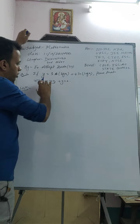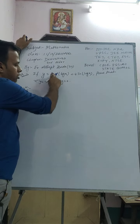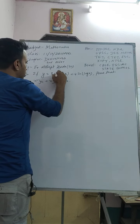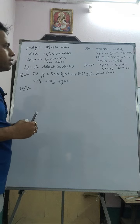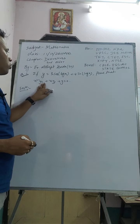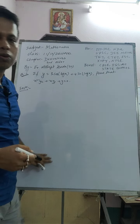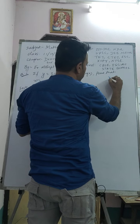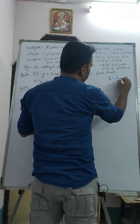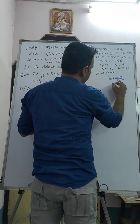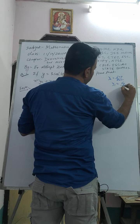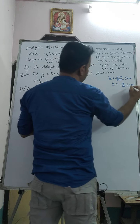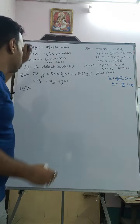So what is the first question? If y = 3cos(log x) + 4sin(log x), prove that x²y₂ + xy₁ + y = 0. You need to know that y₂ means d²y/dx², which is the second order derivative, and y₁ means dy/dx, which is the first order derivative.